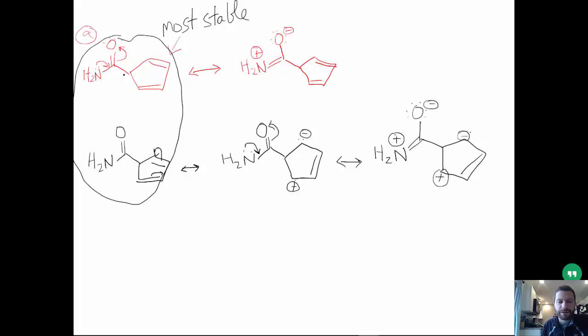And then our next most stable would be probably this one up here because we have more pi bonds. We have three, and the oxygen being electronegative is carrying that negative charge. Down here, it's a carbon that has it. And then this one here is the least stable because we have the fewest pi bonds with two, and we have multiple charges present. So that was letter A.